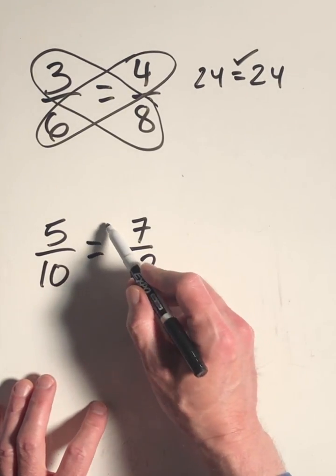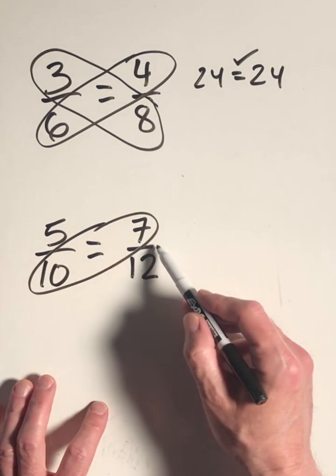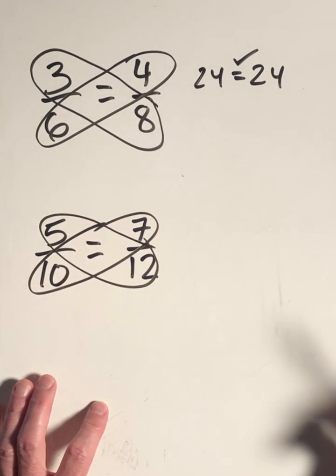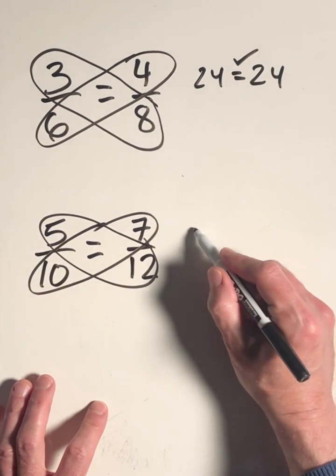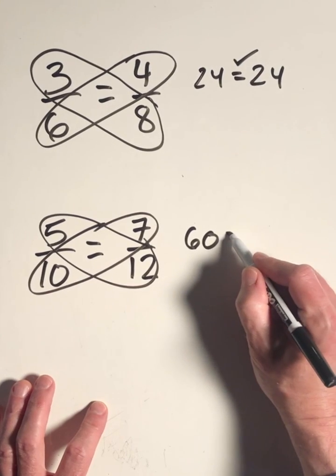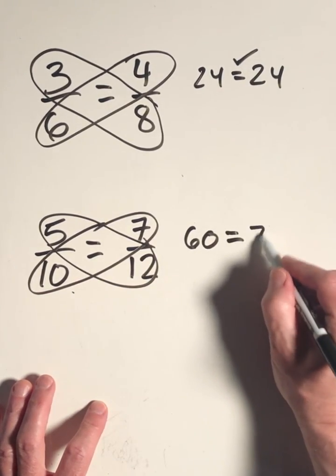If I look at the same thing down here, I should be able to take 10 times 7, and that should equal 5 times 12. Well, 5 times 12 is 60, and 7 times 10 is 70.